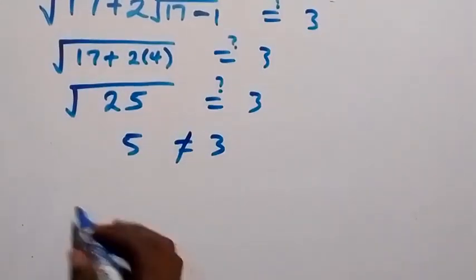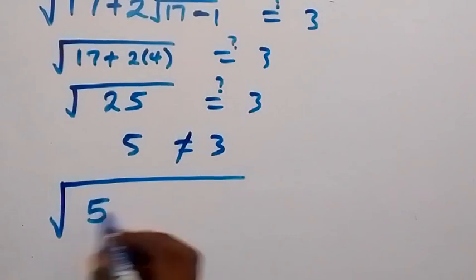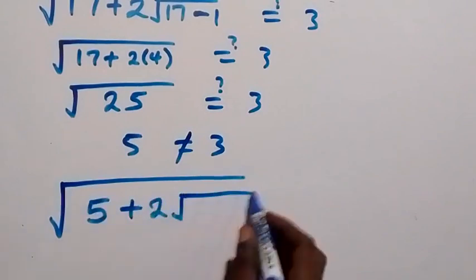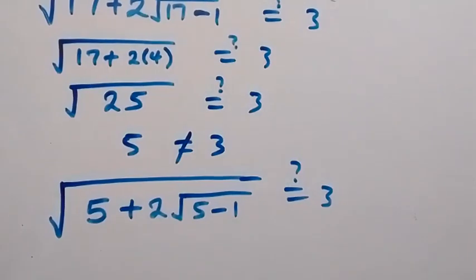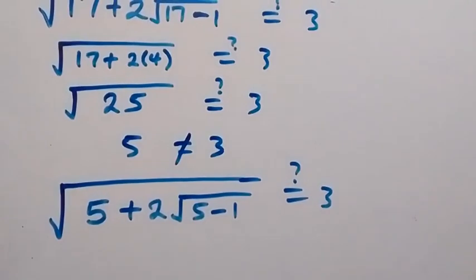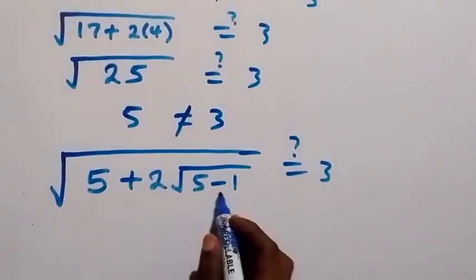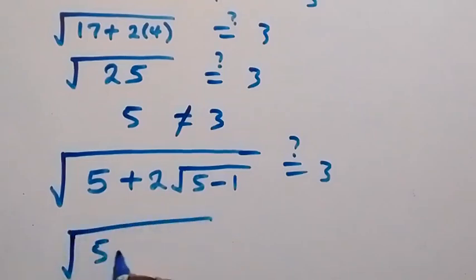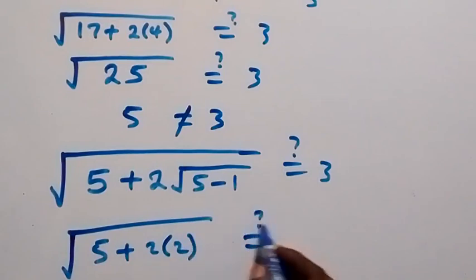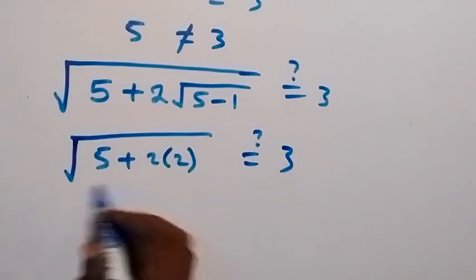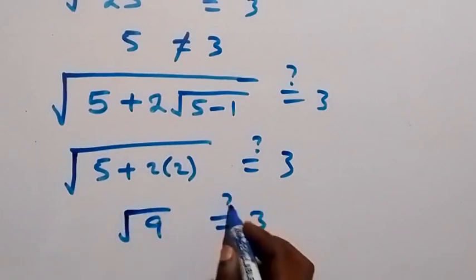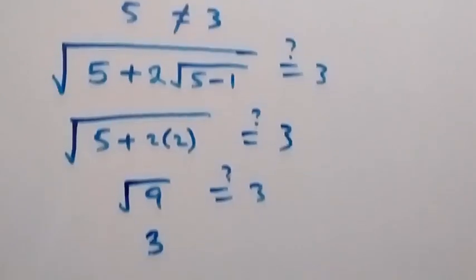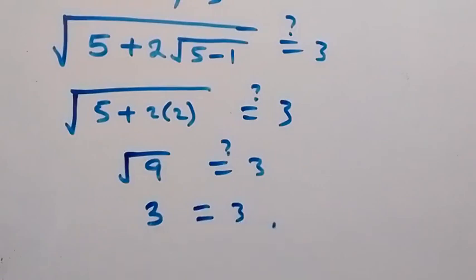For x equals 5: substituting gives square root of 5 plus 2 root of 5 minus 1. That is 5 minus 1 equals 4, and root 4 is 2. So we have square root of 5 plus 2 times 2, which is square root of 5 plus 4, that is square root of 9. Root 9 is 3, which equals 3. So x equals 5 is confirmed as the solution.